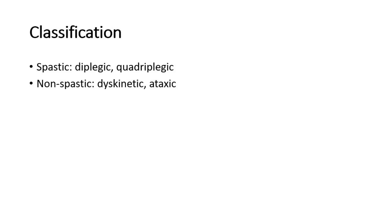These are some questions that might be asked in the discussion for cerebral palsy. The classification can be divided into spastic or non-spastic cerebral palsy. The spastic type includes diplegic or quadriplegic, and the non-spastic type would be dyskinetic and ataxic cerebral palsy.